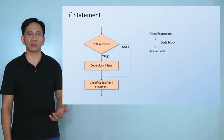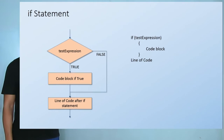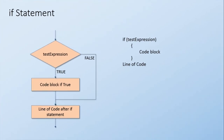On the left is the flowchart and on the right is the syntax of an if statement. We see here that we start with the keyword if, then followed by the test expression enclosed in parentheses. If the test expression is true, the program will proceed on executing the code block enclosed in curly braces, then goes on to the line of code immediately after the if statement.